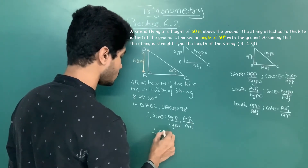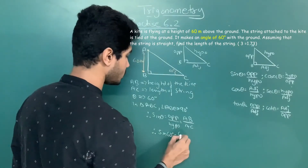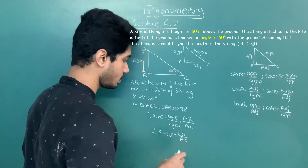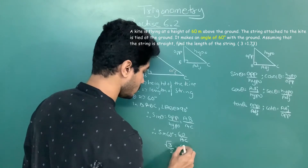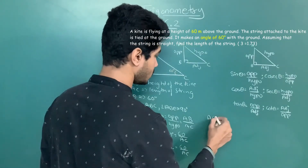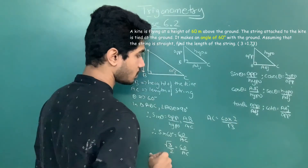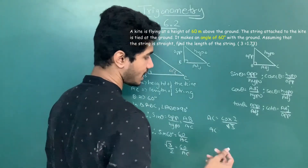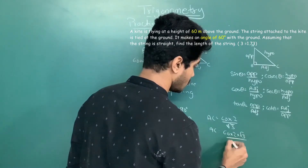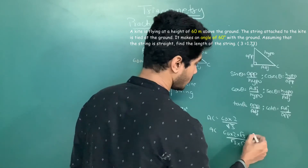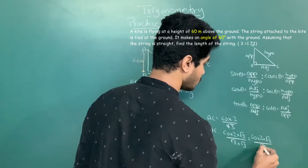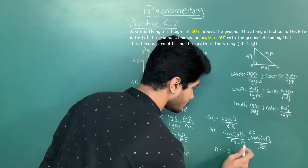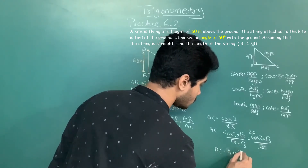Sin 60 is root 3 by 2 from the trigonometric table. So root 3 upon 2 equals 60 upon AC. Cross-multiplying gives AC equals 60 times 2 upon root 3. To remove the root from the denominator, we rationalize: AC equals 60 times 2 times root 3 upon root 3 times root 3, which equals 120 root 3 upon 3. Simplifying, 60 over 3 gives 20, so AC equals 40 root 3.